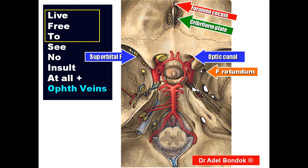This is foramen rotundum, transmitting the maxillary nerve. This is foramen ovale — remember the word 'male': Mandibular nerve, Accessory meningeal artery, Lesser petrosal nerve, and Emissary vein connecting the cavernous sinus with the pterygoid and pharyngeal plexus.